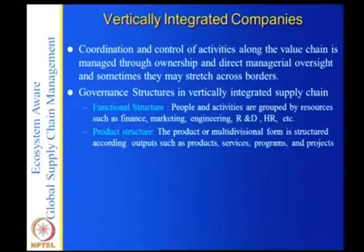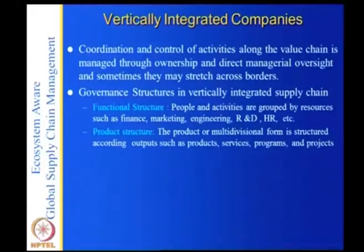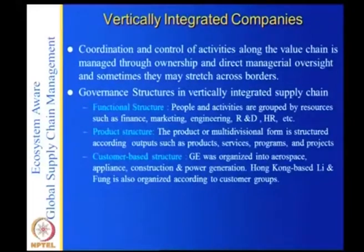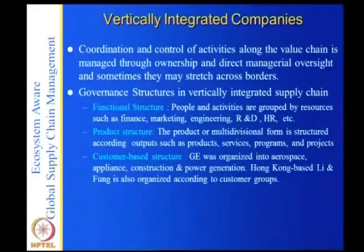Another kind is product architecture, where multi-dimensional firms are structured according to outputs — products, services, programs, or projects. General Motors is an example. There are also customer-based organizations: for instance, General Electric has appliances like dishwashers and air conditioners for homeowners, while its construction and power generation division provides cranes, generators, and boilers for a completely different customer base.